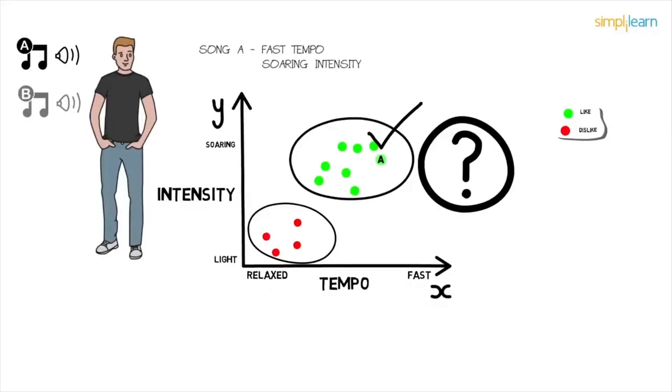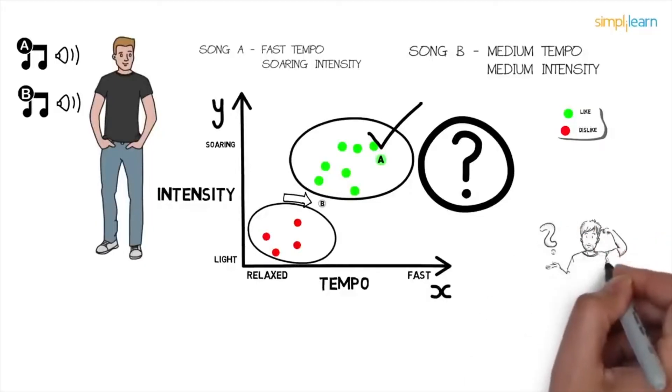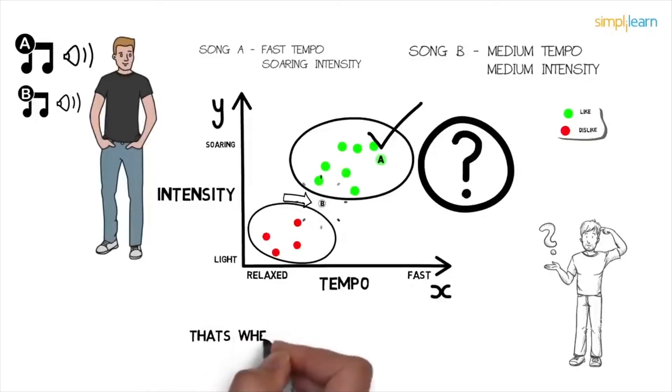Let's say now Paul listens to a new song, Song B. Song B lies somewhere here with medium tempo and medium intensity, neither relaxed nor fast, neither light nor soaring. Now can you guess whether Paul likes it or not? Not able to guess? Are the choices unclear? Correct. We could easily classify Song A, but when the choice became complicated as in the case of Song B, that's where machine learning comes in.